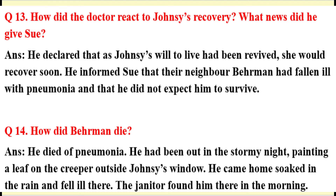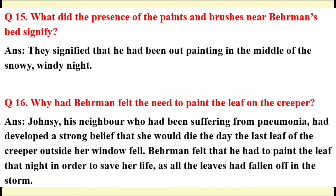Question 14: How did Behrman die? Answer: He died of pneumonia. He had been out in the stormy night painting a leaf on the creeper outside Johnsy's window. He came home soaked in the rain and fell ill. The janitor found him in the morning.